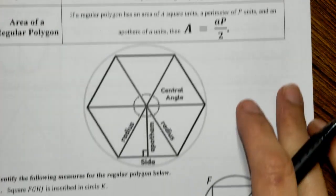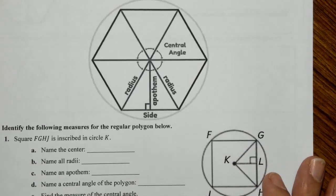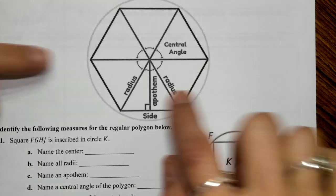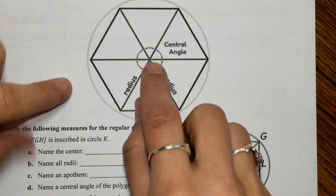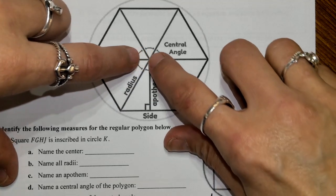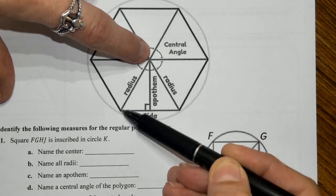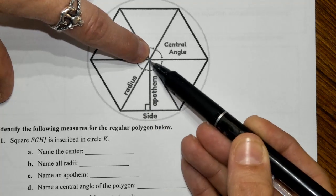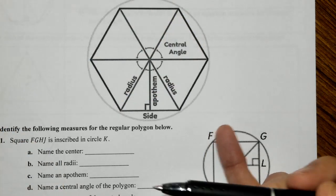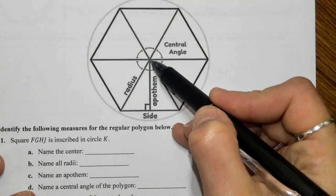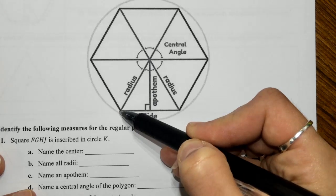Let's take a look at the diagram and identify these different parts. We have our circumscribed circle all the way around. The radius goes from the center of the circle to the circumscribed circle, ending at each vertex. If you ignore the polygon, a radius goes from the center of the circle to any point on that circle, so it ends at the vertex.